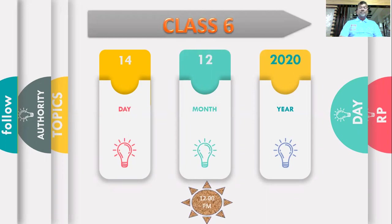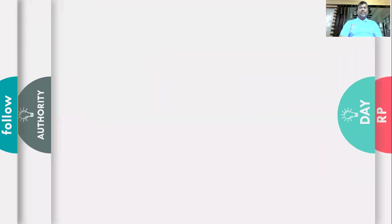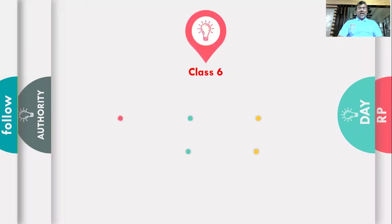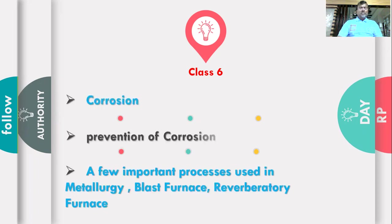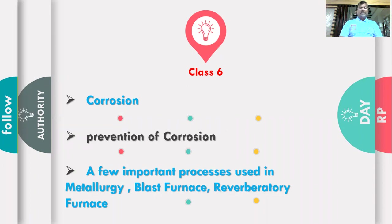The topics to be covered in this class include corrosion — some part we learned previously, and today we will learn in detail about the chemical process involved in corrosion and how to prevent it. We will also cover a few important processes used in metallurgy like the blast furnace and reverberatory furnace.